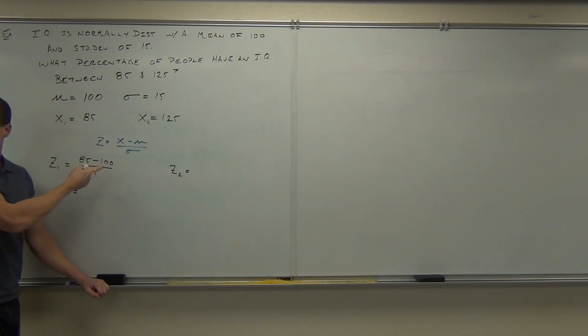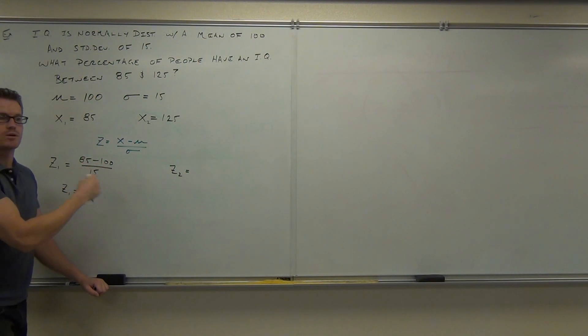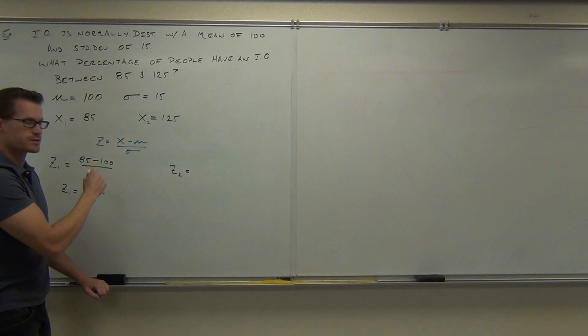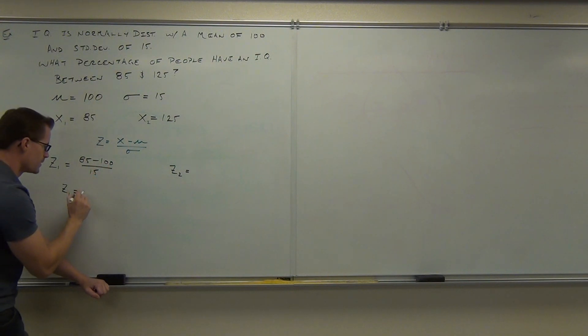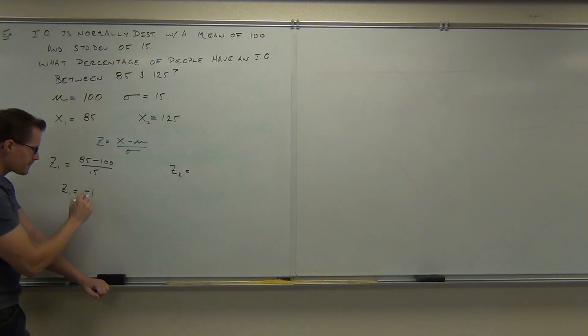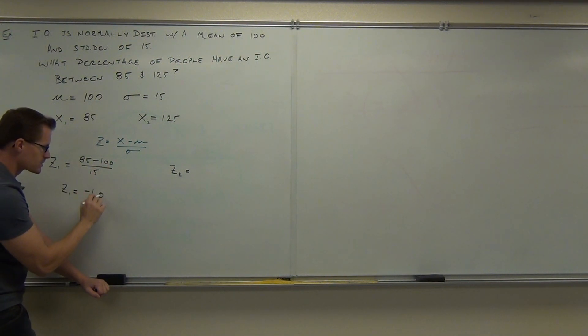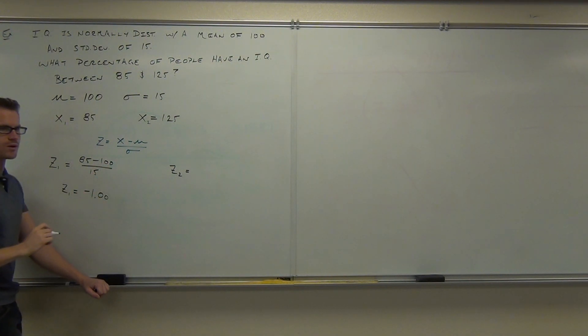So you get positive 1 — do you see that? And then you'd be looking up the completely wrong thing on your table. So negative 1. Output point 0, 0 — just so we're clear on that.